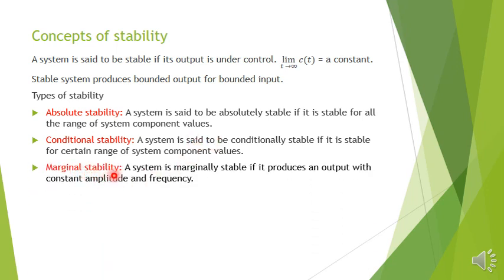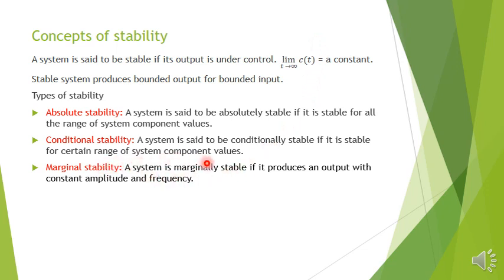Marginal stability means the system produces an output with constant amplitude and frequency. Here, the limit as t tends to infinity of c(t) is not a constant but is also not infinity — it remains between two constant values a and b. This is called marginal stability.